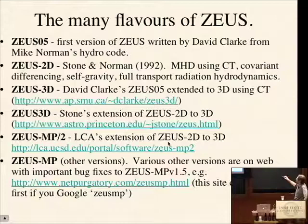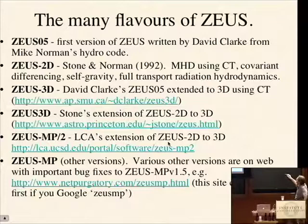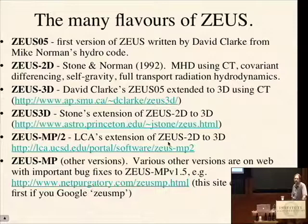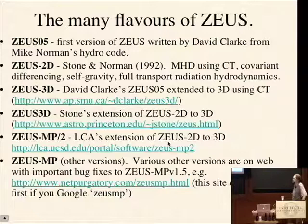There's a 3D extension of the 2D code, which is not the same as Zeus-3D, and you can download a version of that as well. There's also a more comprehensive version being put together by Mike Norman at UCSD called Zeus-MP2 — an extension of Zeus-2D to 3D using CT and many other bells and whistles, with a downloadable URL. Zeus-MP stands for multi-physics and multiprocessor — it's MPI parallel. There are also parallelized versions with OpenMP, and other versions of Zeus-MP with various bug fixes to Zeus-MP v1.5.